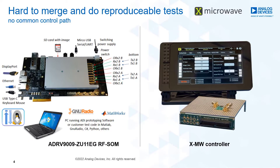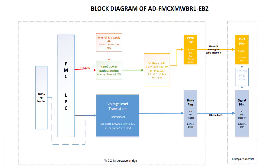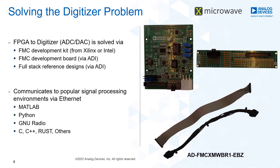At the moment, there is no common control path between the X-Microwave controller and an FPGA that can be used in controlling the hardware. This makes it difficult to merge and do reproducible tests on both kinds of platforms. Our product, the ADFMC X-Microwave Bridge 1 EB kit, solves this problem by creating an interface between the X-Microwave Protoplate and an FPGA device.